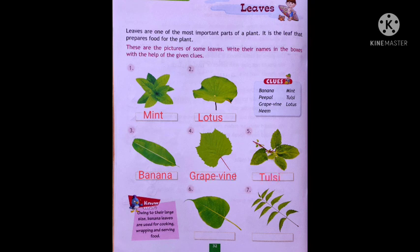It is tulasi — the leaf of a tulasi. And next one, peepal — it's a leaf of a peepal. And last one, it is neem.